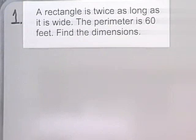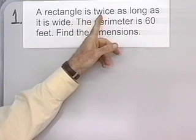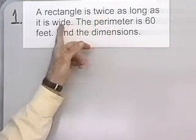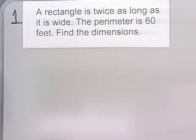Step one, what we want to do is read and mentally list the items that are known and the items that are unknown. We have a rectangle, twice as long as it is wide, so the length is twice the width, and the perimeter is 60 feet. We just mentally read back over the problem to do that.